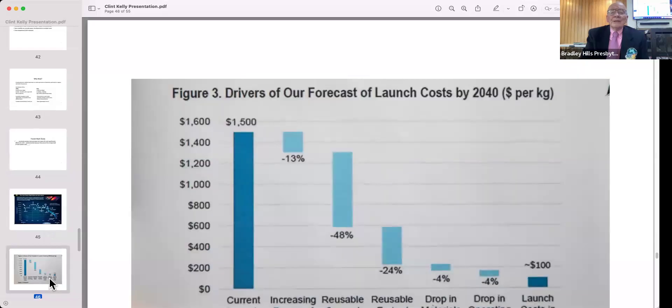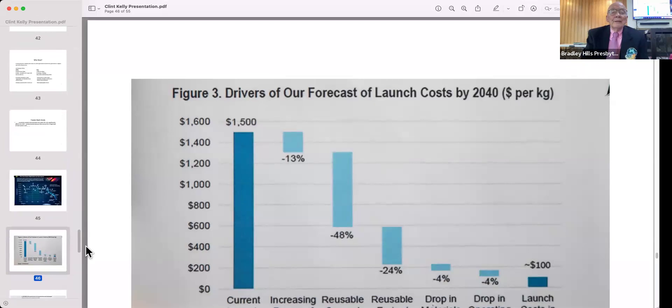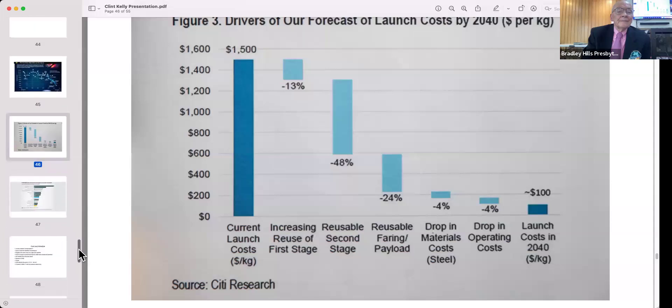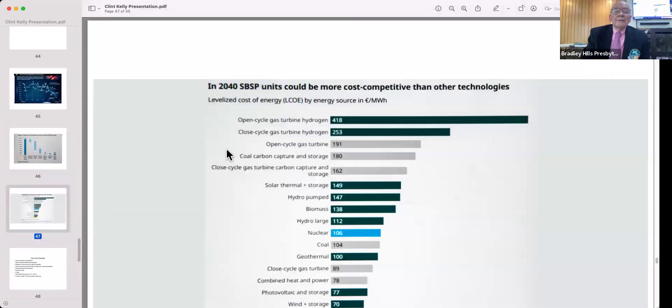This is some idea by Citibank of how cost is going to come down. The guess is that in five to ten years we'll be talking about something in the order of a few hundred dollars per kilogram. This is the estimate of what electricity might cost from a whole bunch of sources.